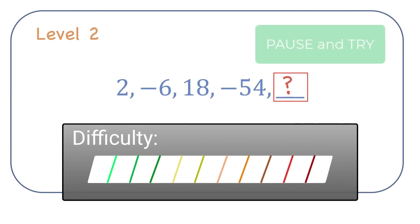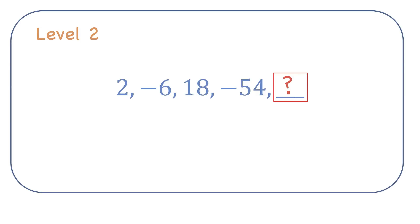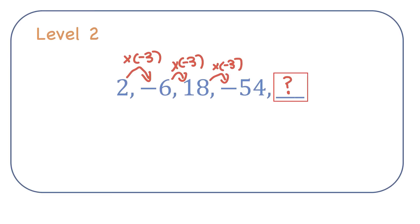Level 2. In this sequence of numbers, hopefully you noticed there is a common ratio between consecutive terms. To get from the first term to the second term, I would just multiply by negative 3. That pattern holds true to get to any next term. 18 times negative 3 is negative 54. So to get to my next term, I just have to multiply negative 54 by negative 3, and that gives me 162.